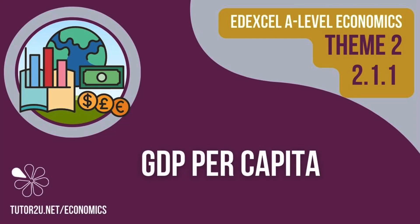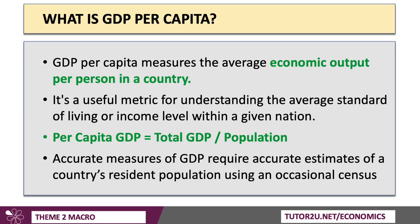In this Edexcel macro video, let's spend a few minutes thinking about a key macro concept: GDP per capita. GDP per capita measures the average value of economic output per person in a country. GDP is the total value of goods and services produced within a nation, and GDP per capita is a useful metric for understanding the average standard of living or income level within a given nation. GDP per capita is total GDP per year divided by population.